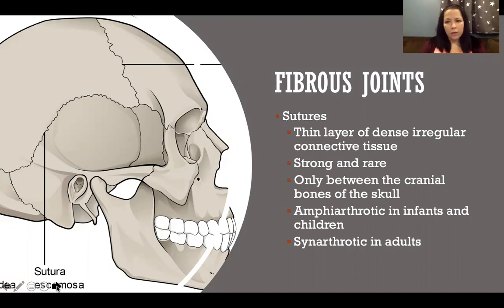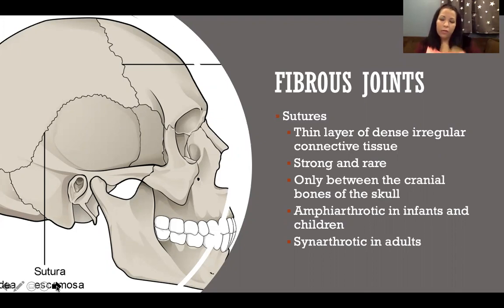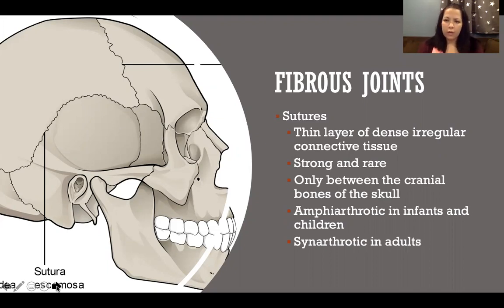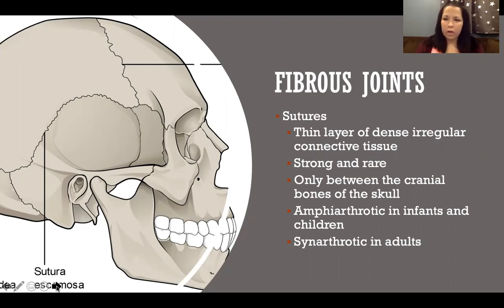Sutures are amphiarthrotic, so slightly movable in infants and children. As we grow and our heads don't need to continue to expand, they eventually completely fuse together and become synarthrotic, so immovable. Some might debate whether they're ever truly immovable — people who do craniosacral therapy or certain chiropractors count on the fact that the plates of the skull are still slightly movable. Anatomically we say it becomes synarthrotic, but that is debatable. It may stay amphiarthrotic throughout life, just less so once we're finished growing and developing.